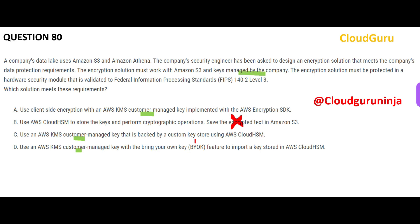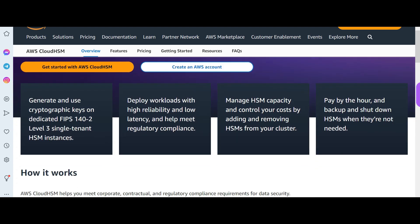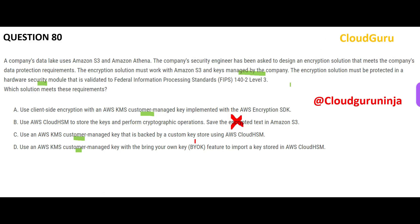The second requirement is to make use of a hardware security module. The moment you see hardware security module, you should think of Cloud HSM — that is the AWS service for hardware security modules. AWS tests your knowledge on different services. So we need answers that include HSM. Option A has no HSM, so A is wrong. We are now left with two possible correct options.